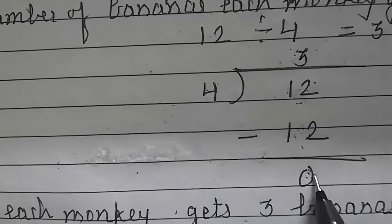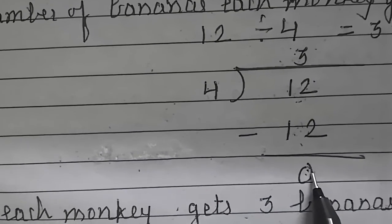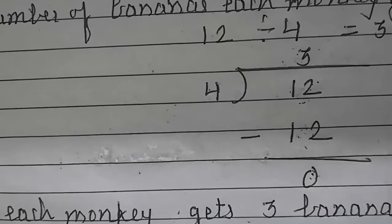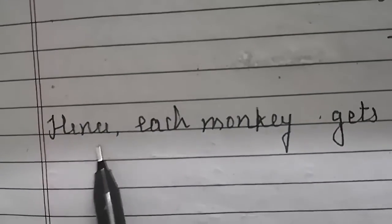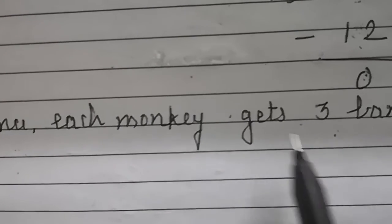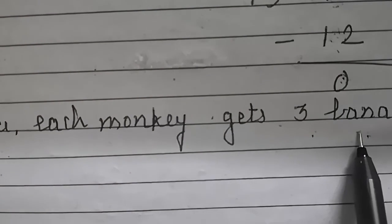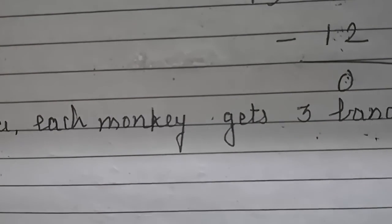The leftover means the remainder here is 0. So final statement we will write. Hence each monkey gets 3 bananas. Understood all of you?